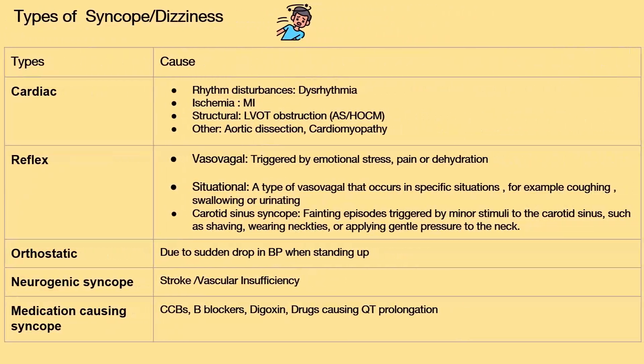Types of syncope — cardiac syncope: rhythm disturbances such as dysrhythmia, ischemia, myocardial infarction, structural abnormalities including left ventricular outflow tract obstruction like aortic stenosis, hypertrophic obstructive cardiomyopathy, aortic dissection, and other cardiomyopathies.